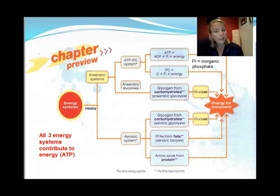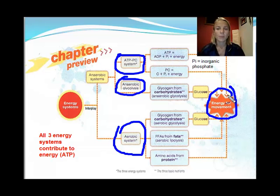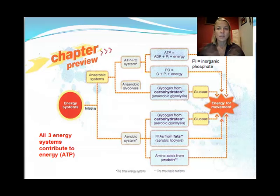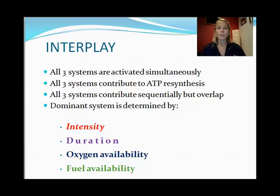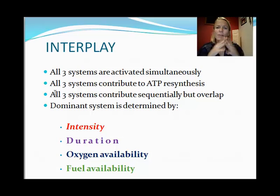This table reminds us that all three systems — ATP-CP, anaerobic glycolysis, and aerobic — use slightly different fuels, but all of them provide energy for movement. Interplay means they are all activated simultaneously; they all contribute to ATP synthesis. Some produce ATP faster than others — anaerobic is faster, aerobic is slower — and they contribute sequentially while overlapping because they all start together.